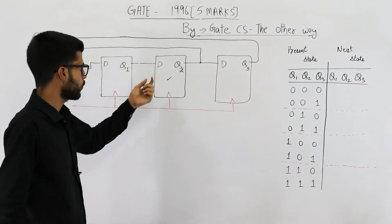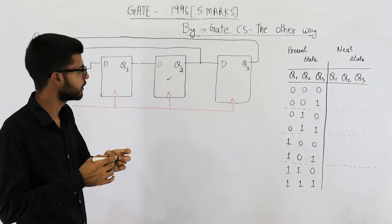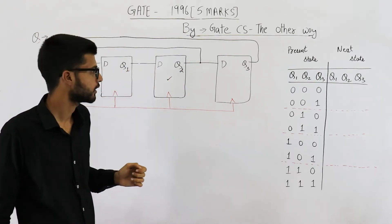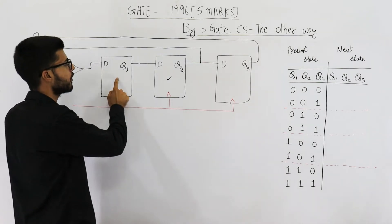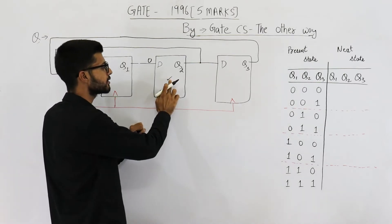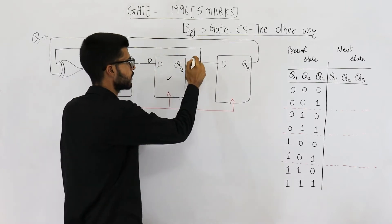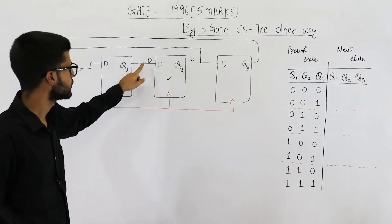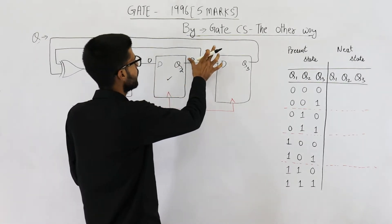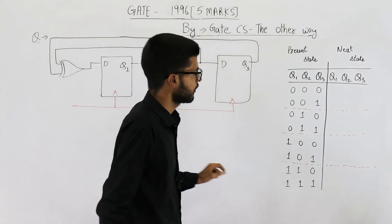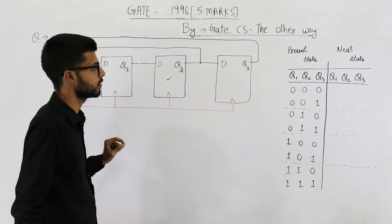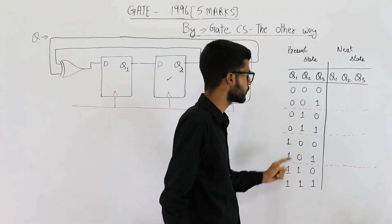The second flip-flop - whatever is connected at this input D will be given as it is in the output Q2 whenever a clock signal is received. That means if this output Q1 of this flip-flop is 0, on seeing a positive edge of clock, this flip-flop will just transfer this zero to the output. Similarly, if the value of Q1 is 1, that will be transferred as it is to output Q2. That means this column will be filled very easily by just copying the values of Q1. So I'm copying Q1's values as it is here.